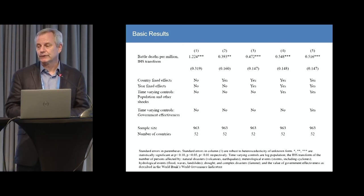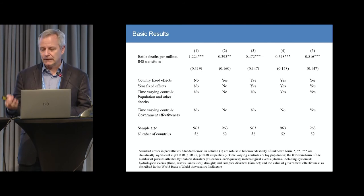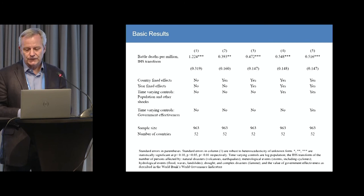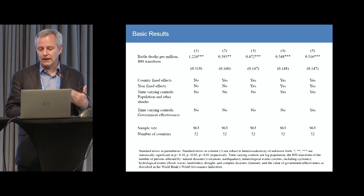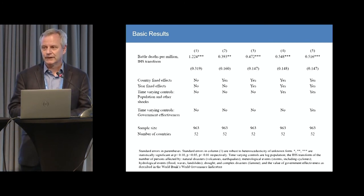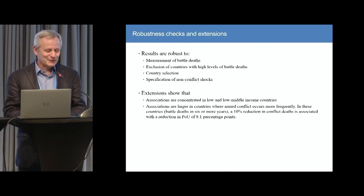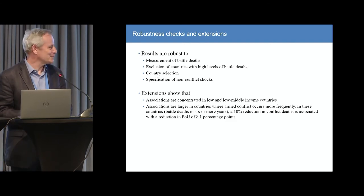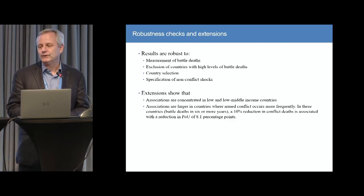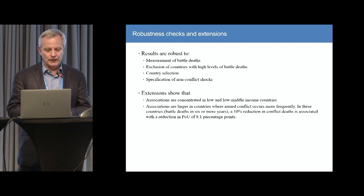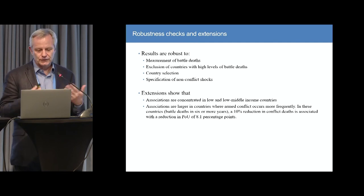If you want to interpret the coefficient in the fifth column — the preferred estimate — it tells us that a 10 percent reduction in battle deaths from armed conflicts is associated with a reduction of 4.9 percentage points in the prevalence of hunger. Like my colleagues on the podium, we subjected the results to gazillions of robustness checks — in terms of the measurement of battle deaths, the exclusion of certain countries, the specification of non-conflict shocks, and so on — and the basic results don't change a great deal.